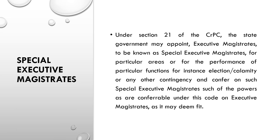The next category is Special Executive Magistrate. Under Section 21 of the CrPC, the state government may appoint Executive Magistrates to be known as Special Executive Magistrates for particular areas or for the performance of particular functions — for instance, elections, calamities, or any other contingency — and confer on such Special Executive Magistrates such of the powers as are conferrable under this code on Executive Magistrates as it may deem fit.